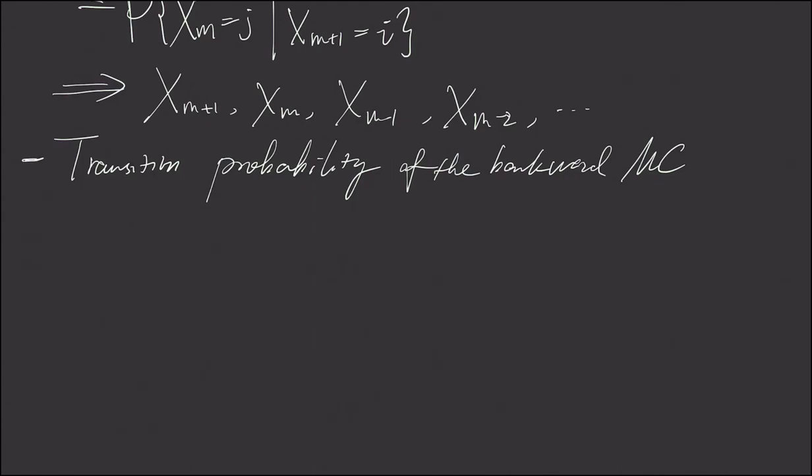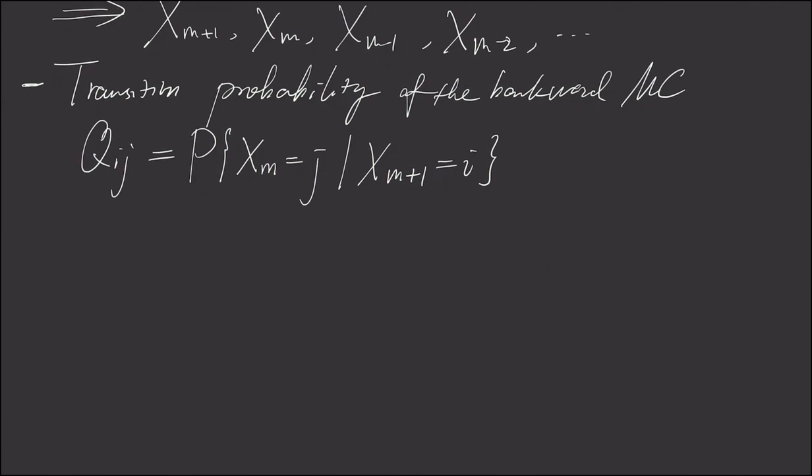Alright, and we denote this as Q, capital Q_ij, which is defined by the probability of exactly what we tried to show earlier in this previous video of why the backward Markov chain still has this Markovian property and is a Markov chain.